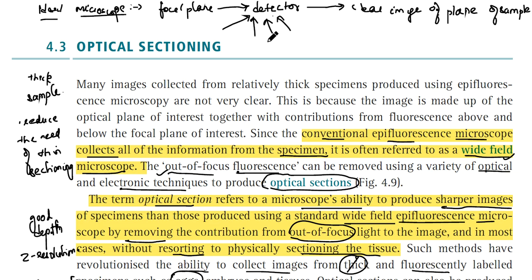In a thick sample, there may be a significant amount of material between the focal plane and the objective lens, which produces a spurious signal and degrades the image quality.